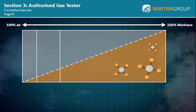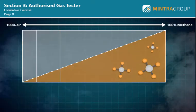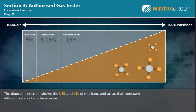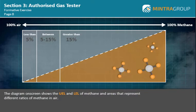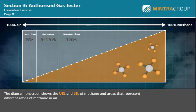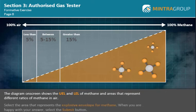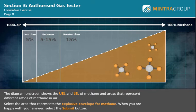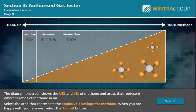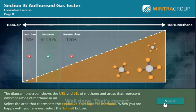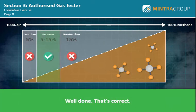Let's try an exercise to test your understanding of the terms and definitions from this section. The diagram on screen shows the UEL and LEL of methane, and areas that represent different ratios of methane in air. Select the area that represents the explosive envelope for methane. When you are happy with your answer, select the submit button. Well done, that's correct.